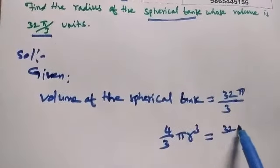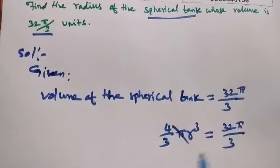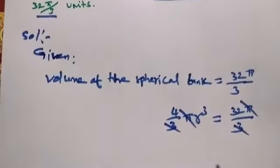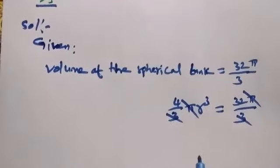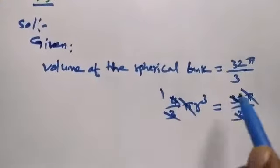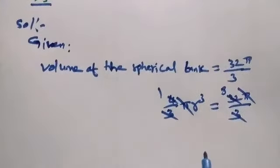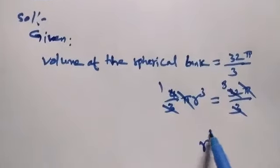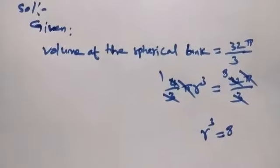So, the volume equals 32π/3. We have 4/3πr³ = 32π/3. Canceling the 3s and πs: 4r³ = 32, which gives us r³ = 8.